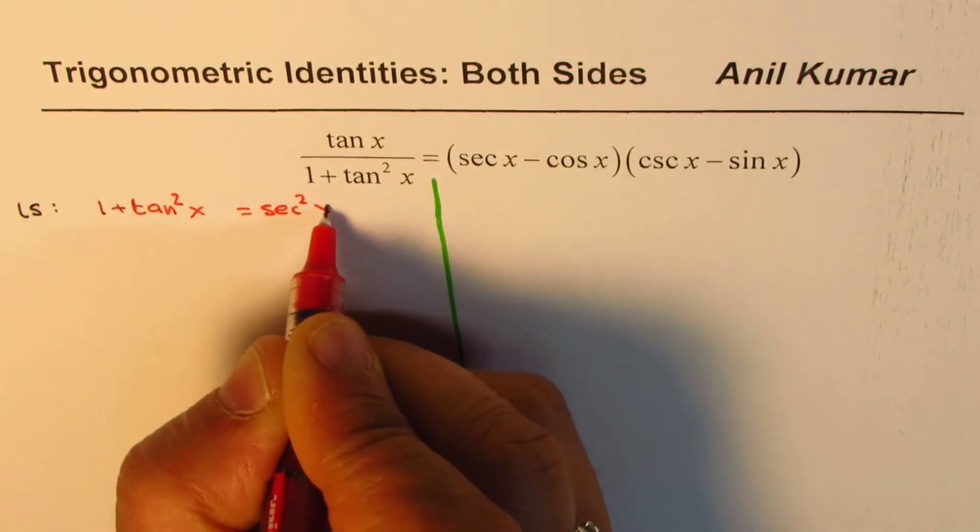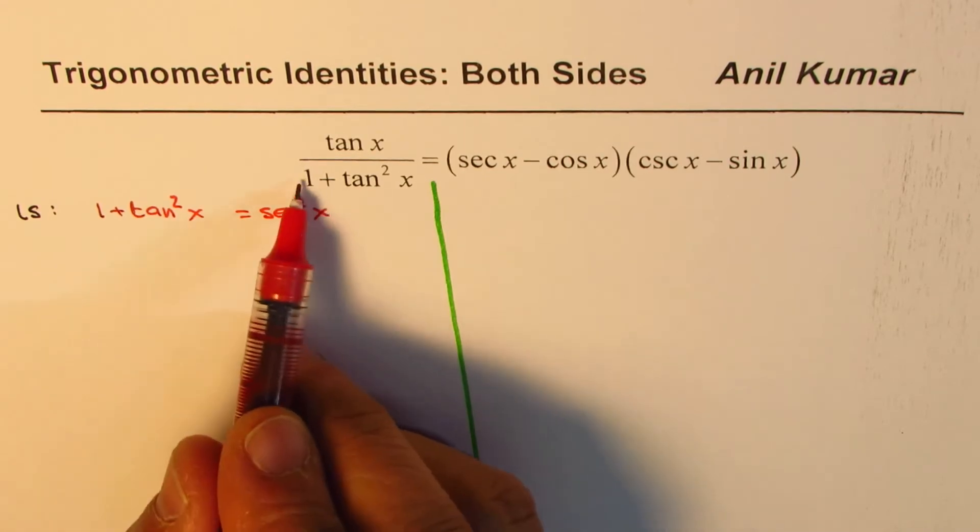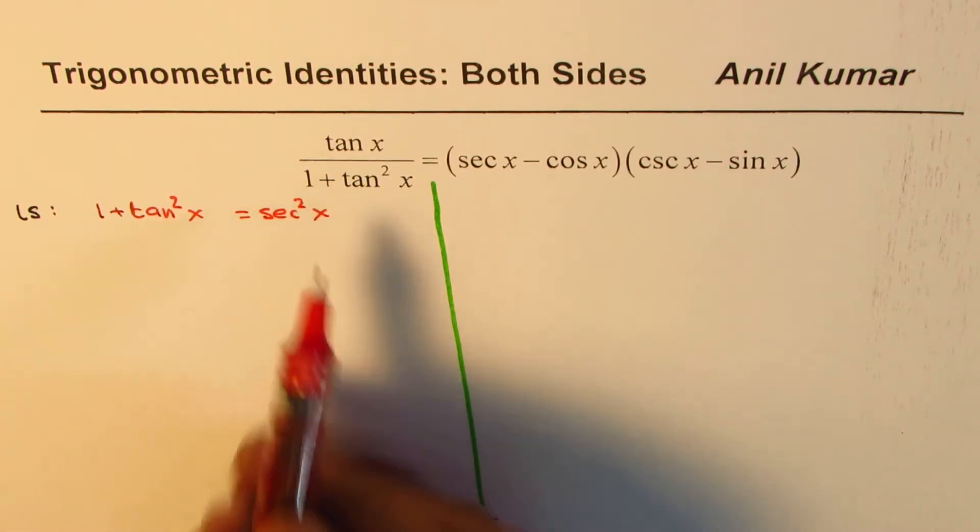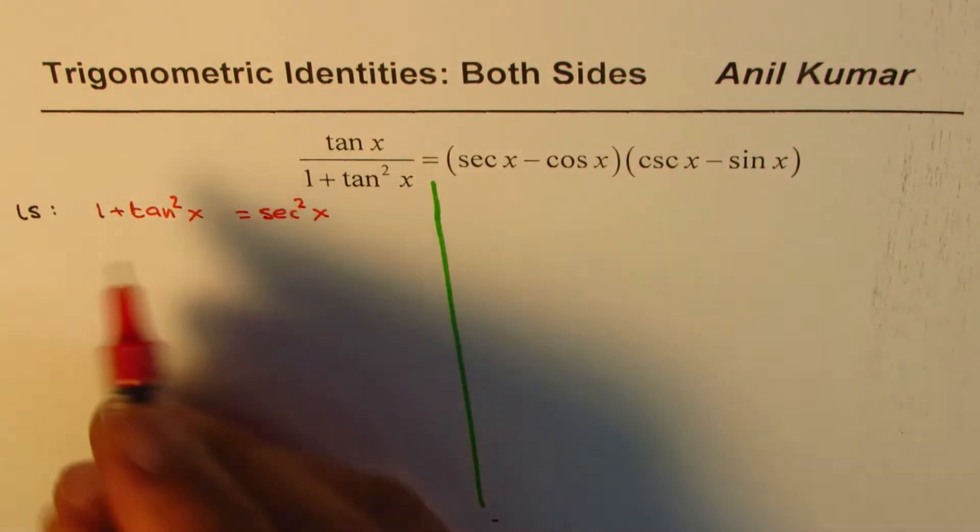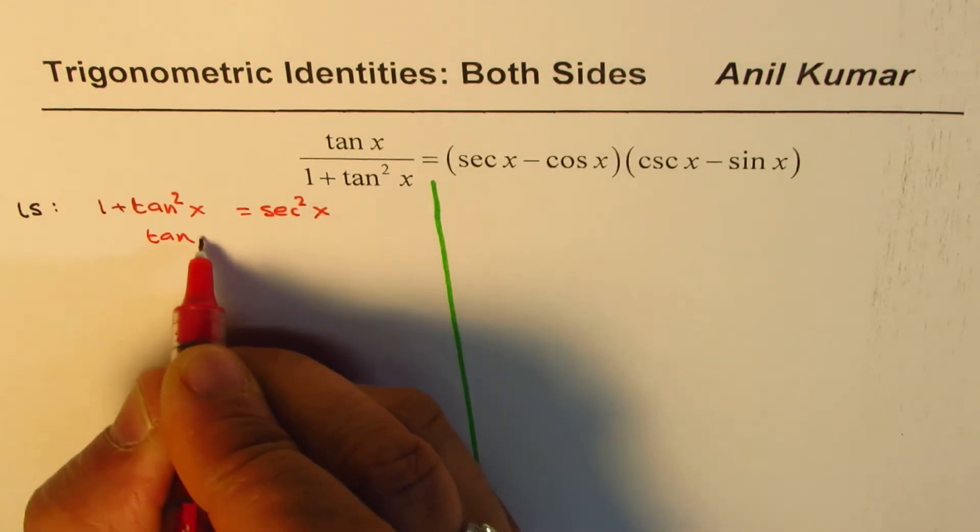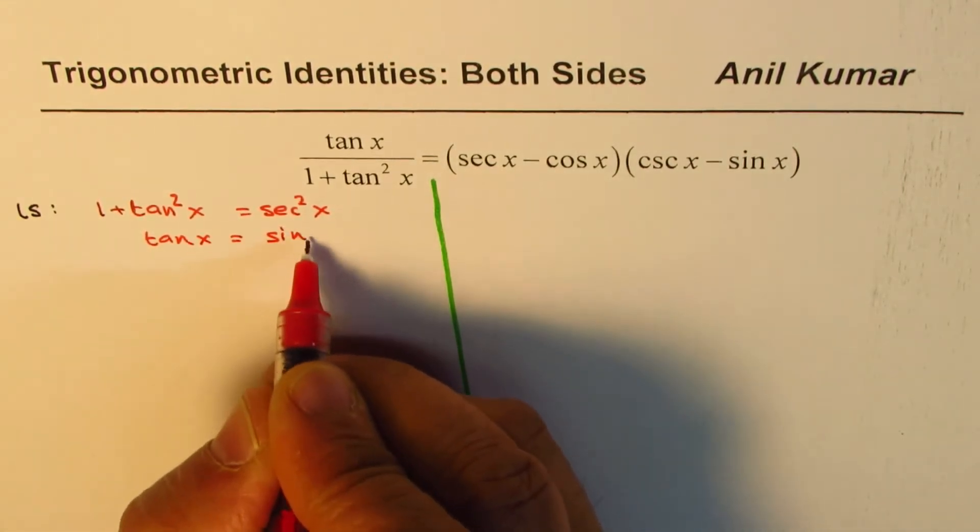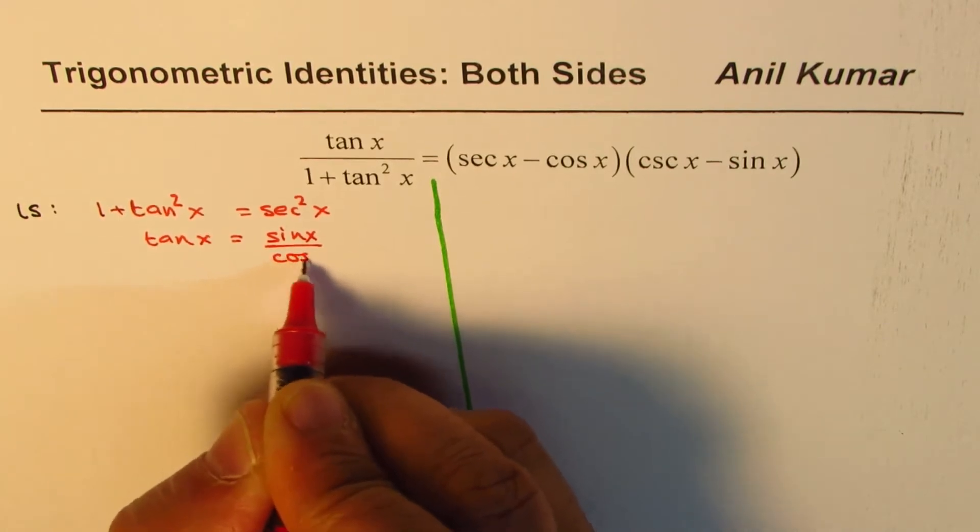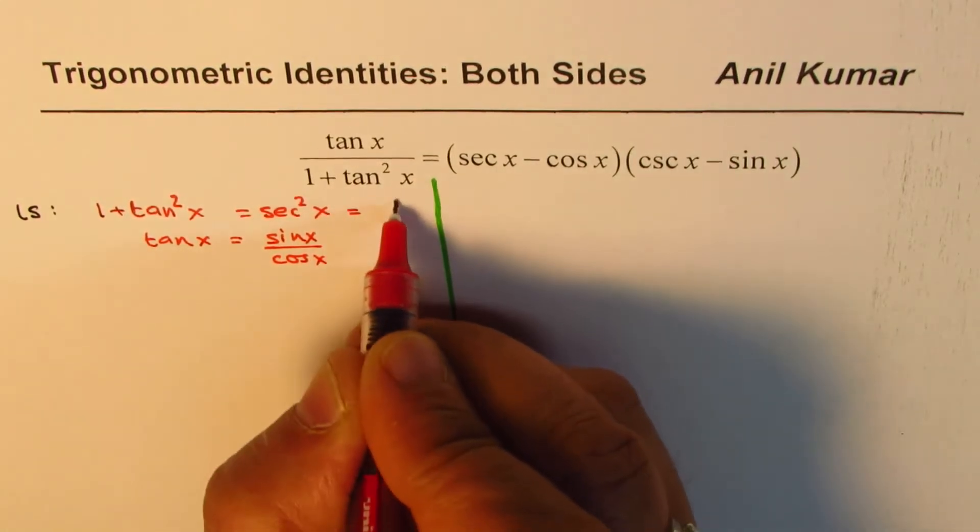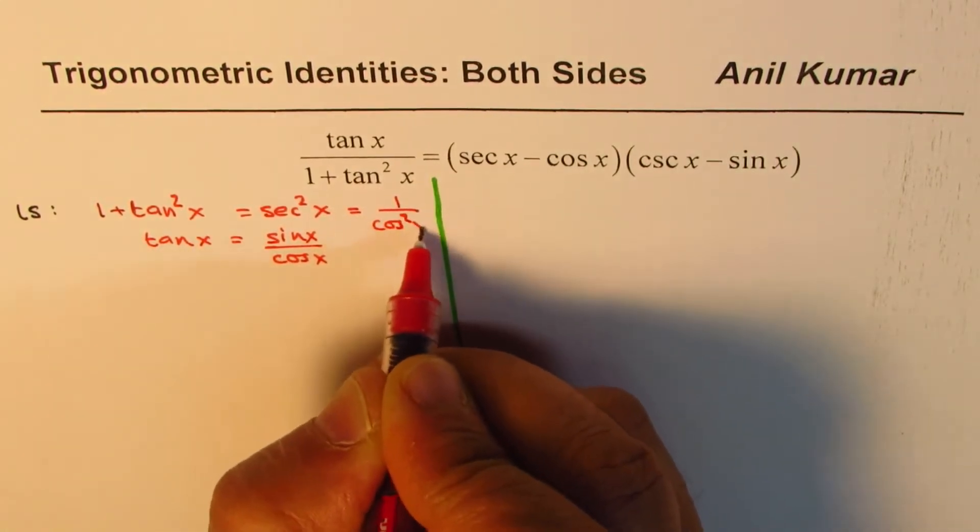As you know, tan x is sin x over cos x and secant square x will be 1 over cos square x. These are the identities which we'll use on the left side.